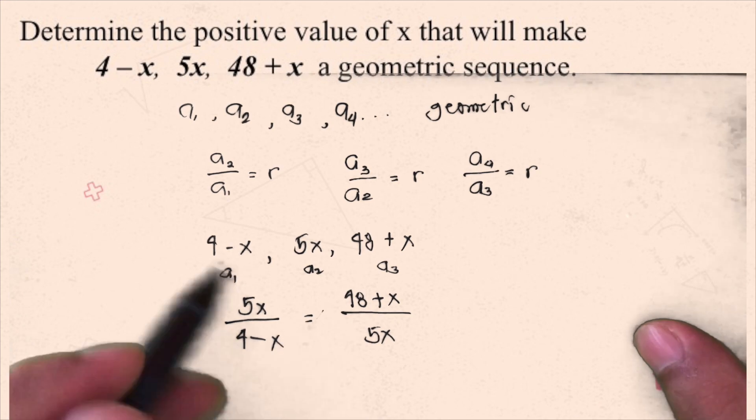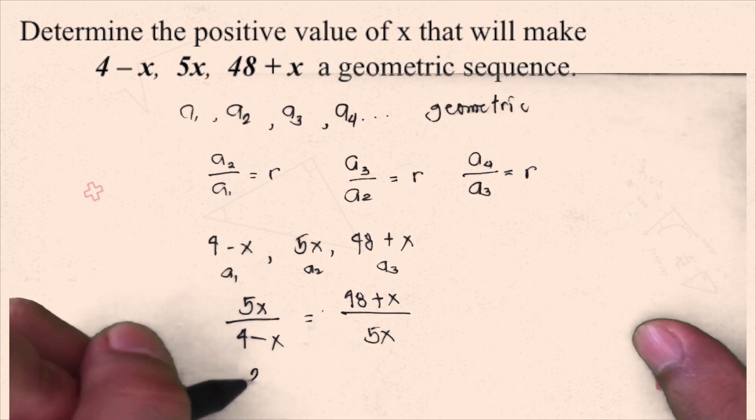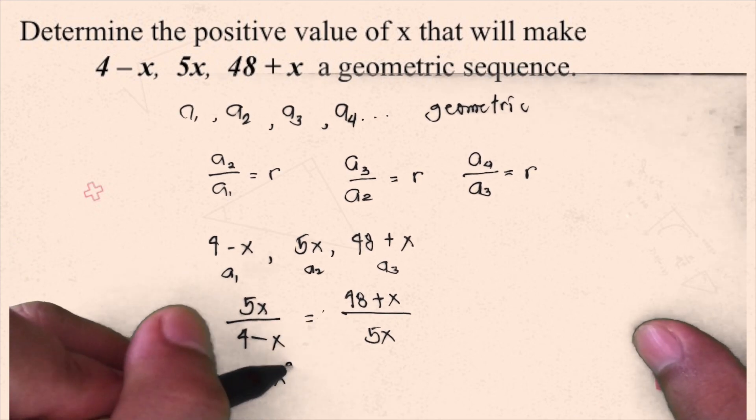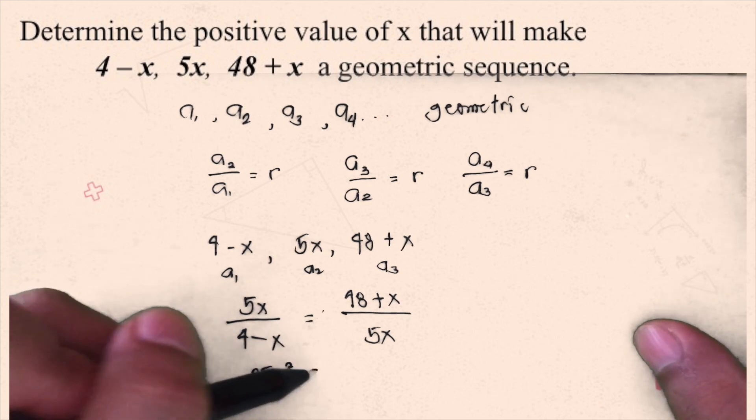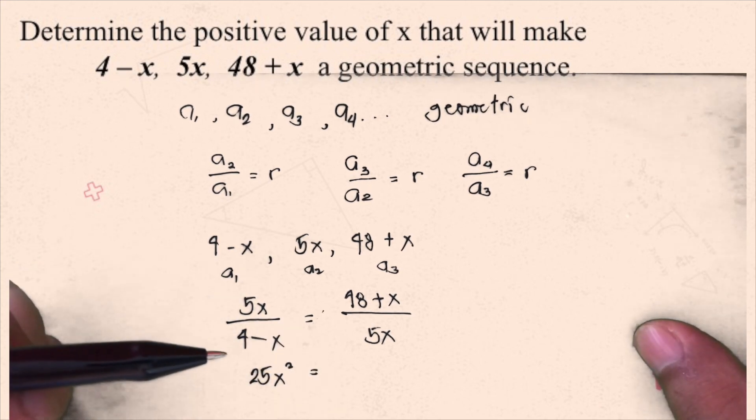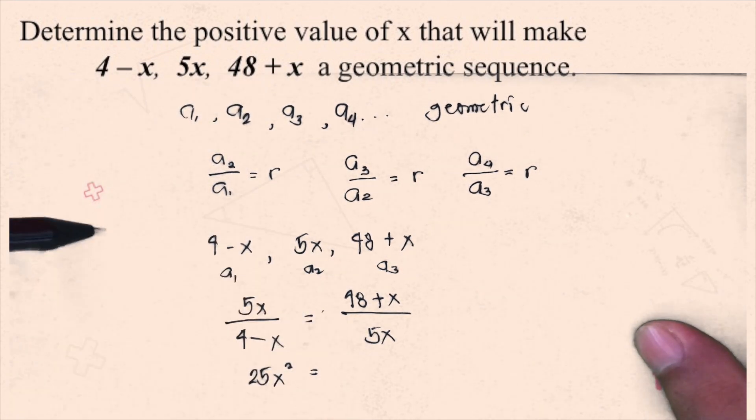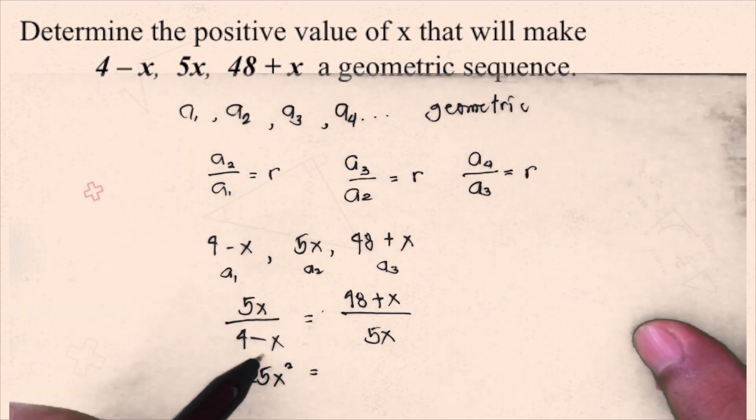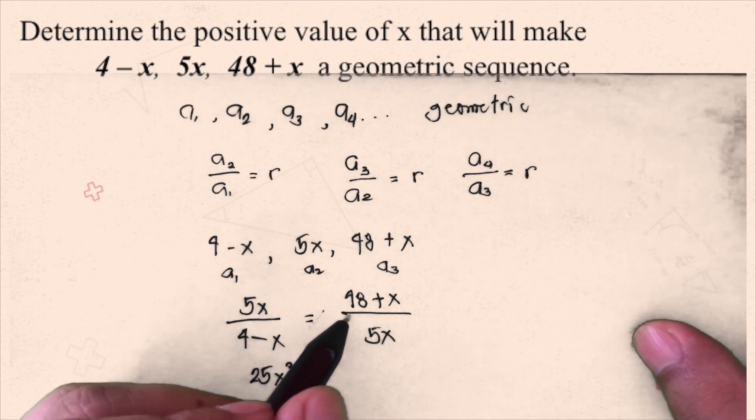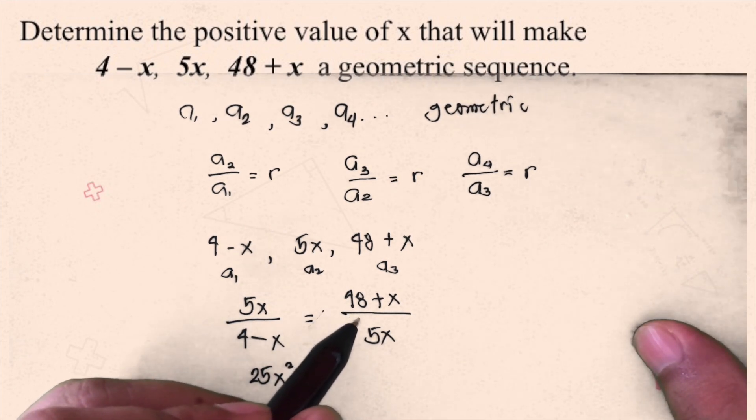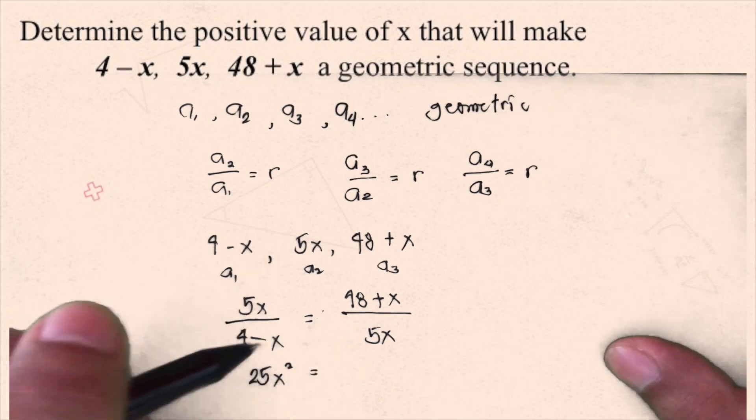So, this will be 5x times 5x is 25x squared equals, we multiply 4 minus x to 48 plus x.